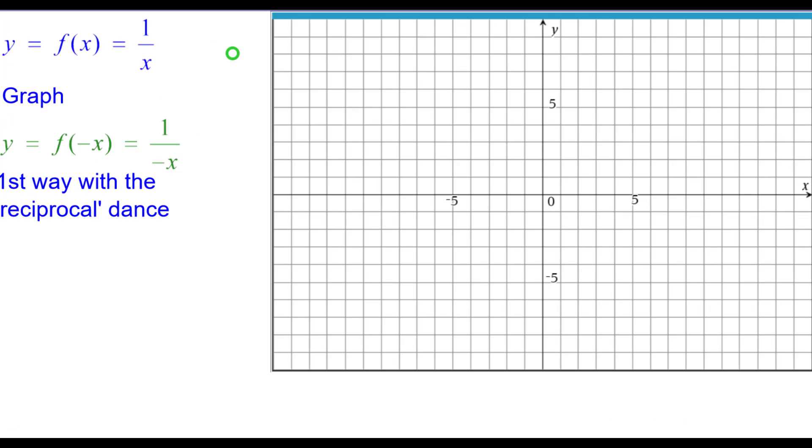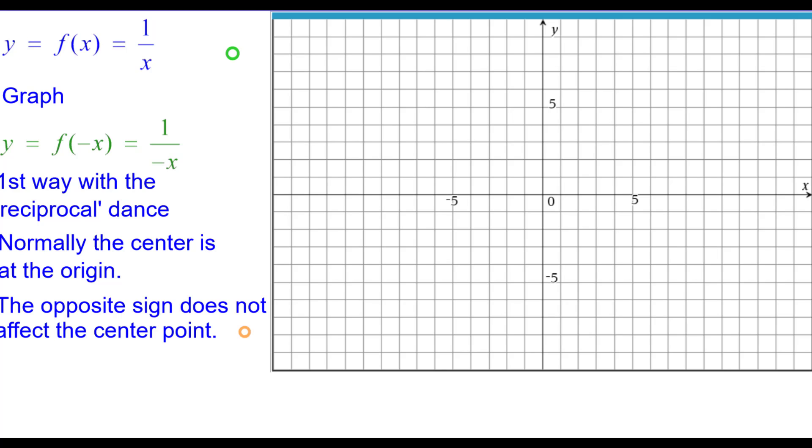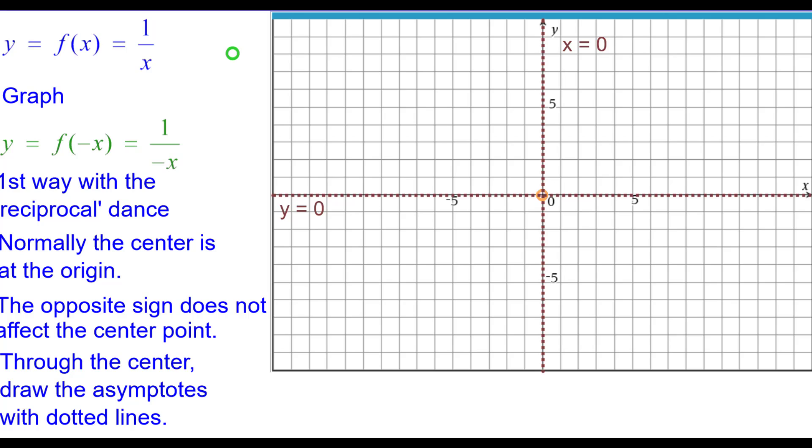First way is with the reciprocal dance. Normally the center of the hyperbola is going to be at the origin. The opposite sign does not affect that center point. So we'll go ahead and plot that. Through the center, we'll draw the asymptotes with dotted lines. First the x-axis, the line y equals 0, and the y-axis, the line x equals 0. Those are our asymptotes or boundary lines.